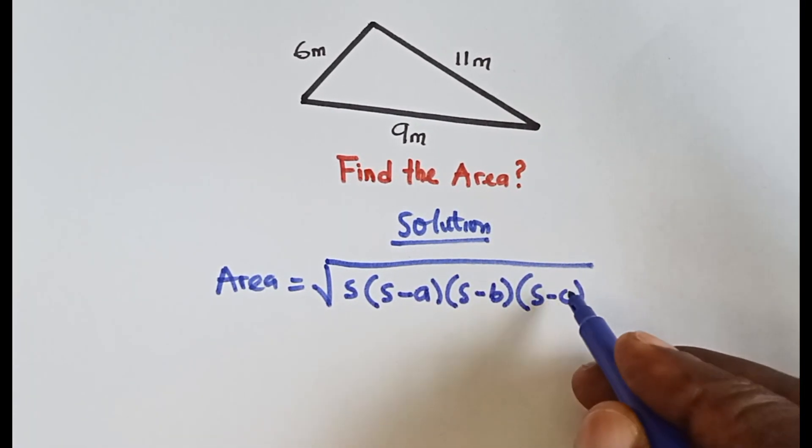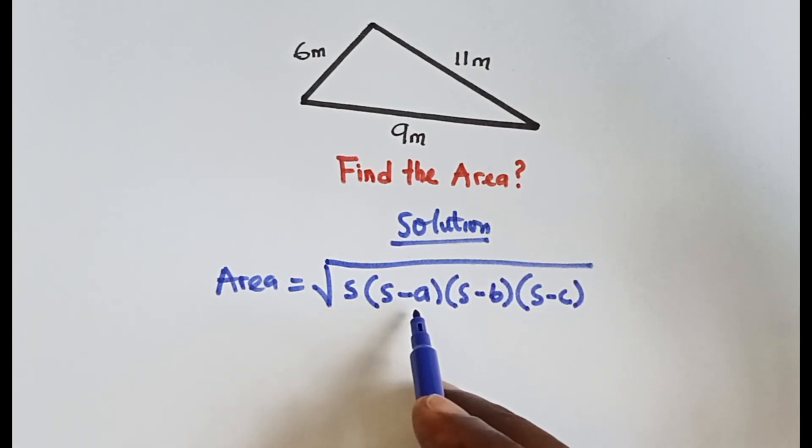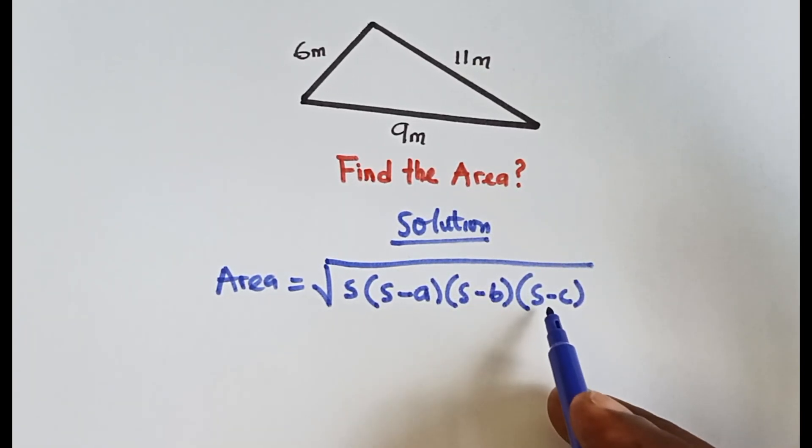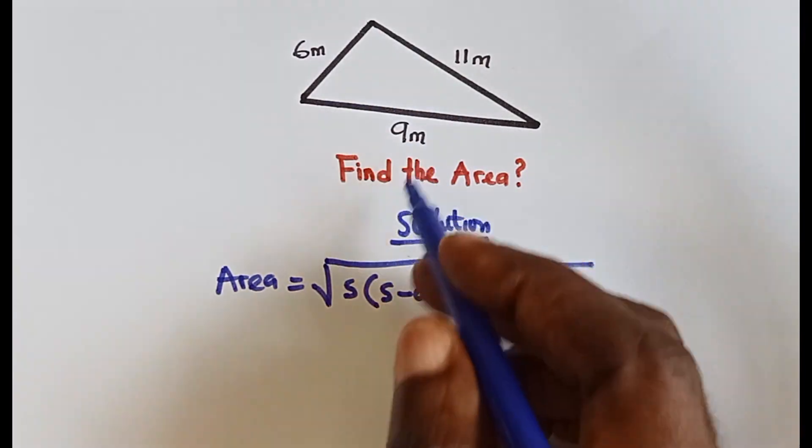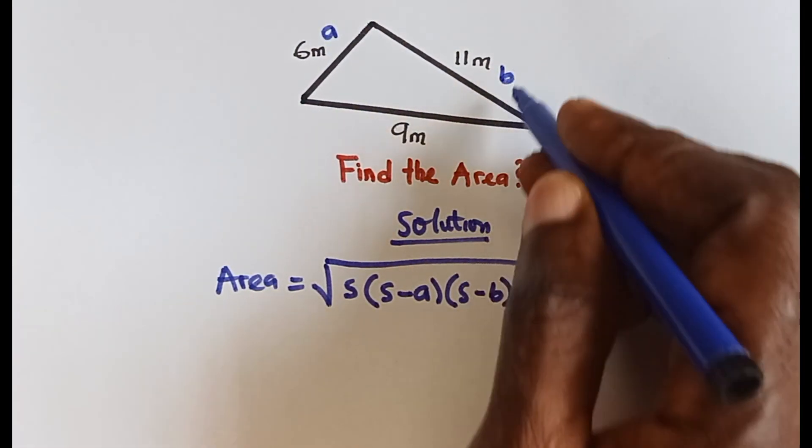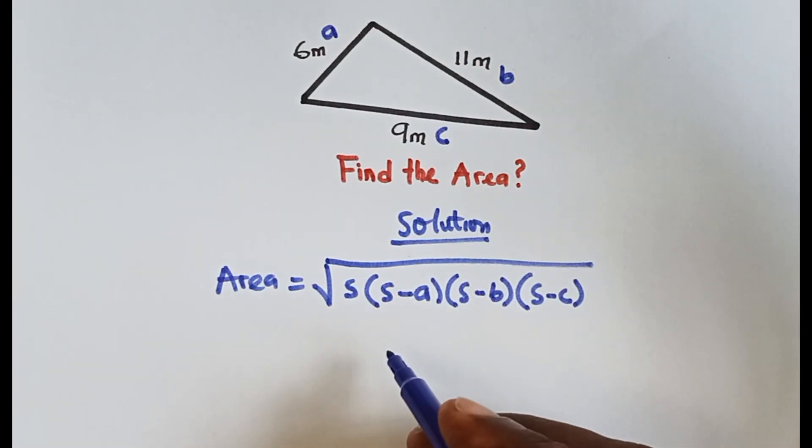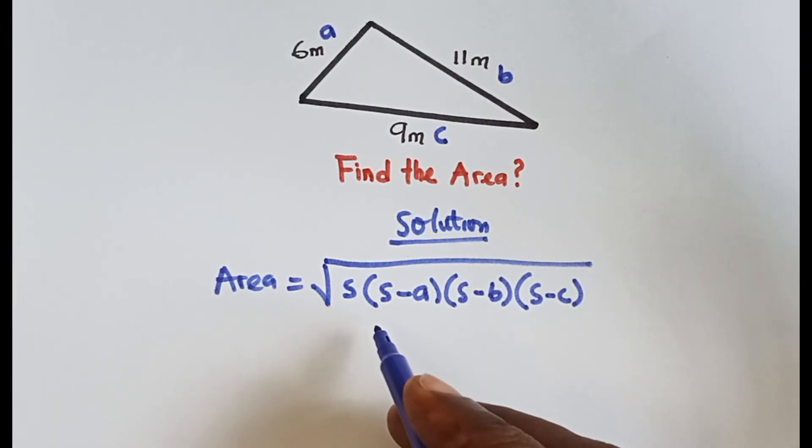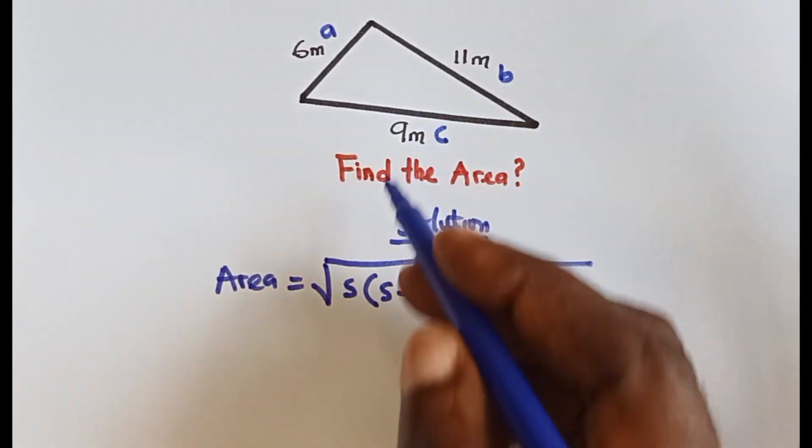From this diagram, we can say this place is side a, this place is side b, and this place is side c. And what is s? S is the semi-perimeter of this triangle.